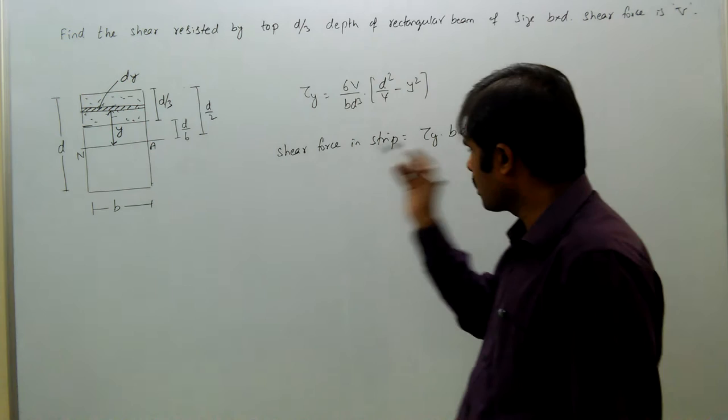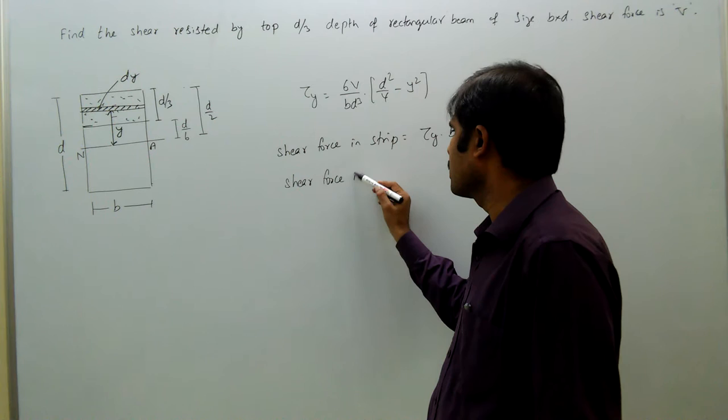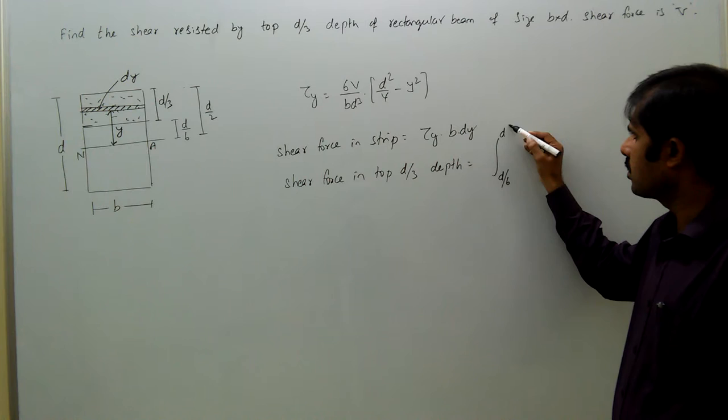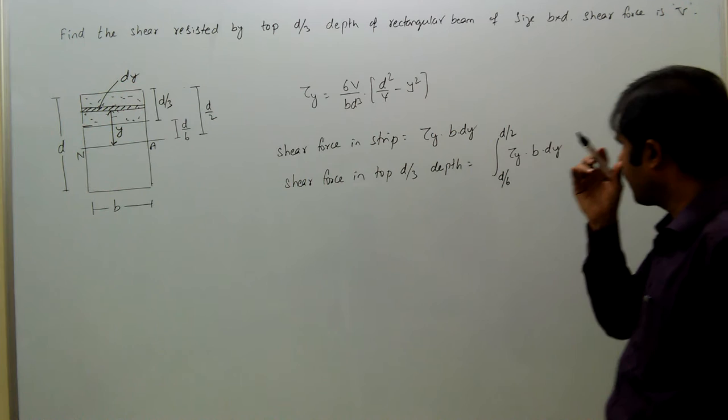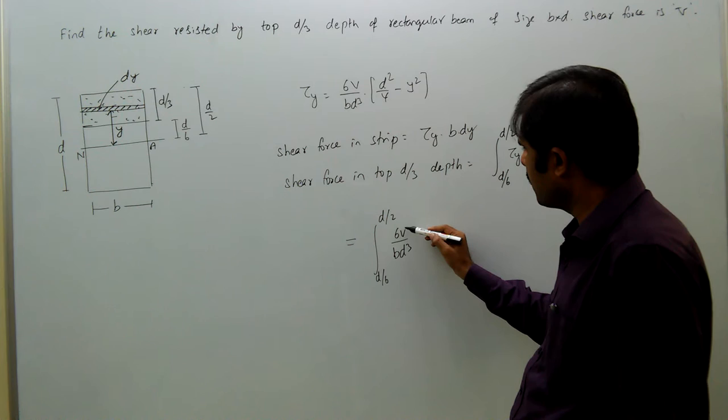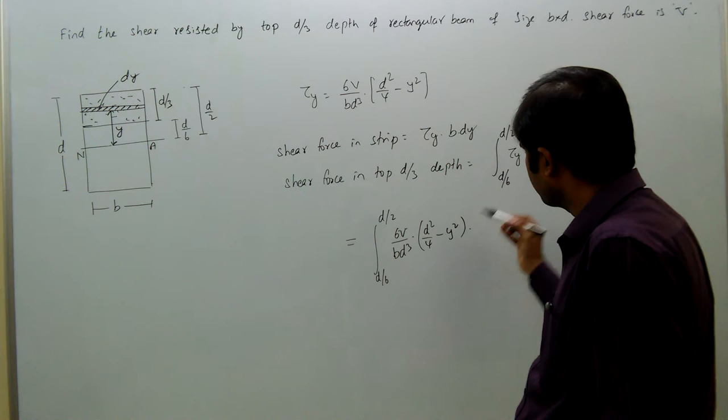Shear force in top d by 3 depth equal to integral, integration from d by 6 to d by 2 from neutral axis. So, tau is 6v by bd cube into d square by 4 minus y square into b into dy.